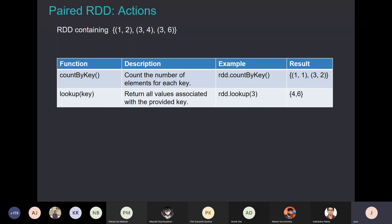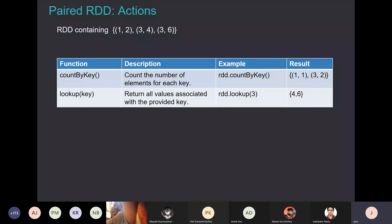Some of the action operations for paired RDDs include countByKey, which counts values based on every key. Another important one is lookup — since an RDD is essentially a distributed array sitting on multiple machines, and a paired RDD has a key and value element, if you want to find the value for a particular key — say the frequency of a specific word — you can do a lookup. Just like hash operations or map operations, you do lookup by key and it produces the values corresponding to that particular key.